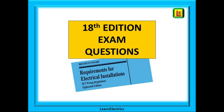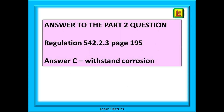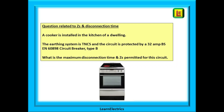Let's look at some exam-type questions. But first, the answer to the foundation earth electrode question from the last video, part 2 of the 18th edition training: the answer is found in regulation 542.2.3 on page 195, and the answer is C — the electrode shall be selected to withstand corrosion. Now back to ZS. A cooker is installed in the kitchen of a dwelling. The earthing system is TNCS and the circuit is protected by a 32 amp BS EN 60898 circuit breaker type B. What is the maximum permitted disconnection time and the maximum permitted ZS for this circuit?